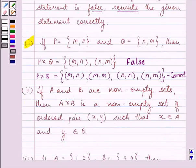So proceeding on to the second part. It says if A and B are non-empty sets, then A cross B is a non-empty set of ordered pair (X,Y) such that X belongs to A and Y belongs to B. So this is a true statement.